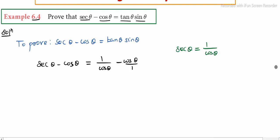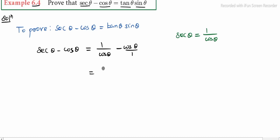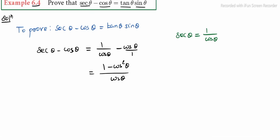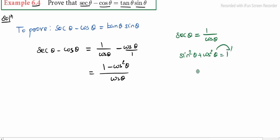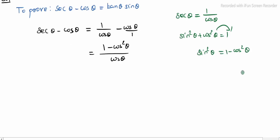1 is understood. Now cross product: 1 minus cos square theta divided by cos theta. We know that sin square theta plus cos square theta is equal to 1, so cos square theta moved to the right side gives sin square theta equal to 1 minus cos square theta. So the numerator 1 minus cos square theta equals sin square theta, divided by cos theta.